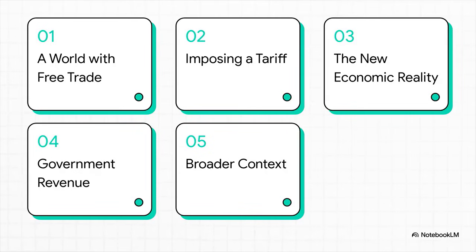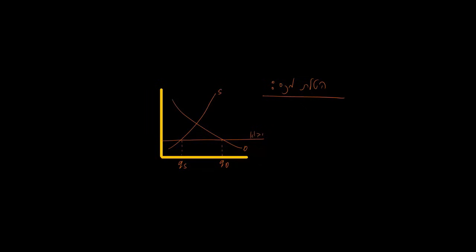We'll see how one little tax can change the whole game for local businesses and for your wallet. So here's the plan. First up, we're going to set the stage with a world of free and open trade. That's our before picture. Then we'll throw a tariff into the mix and watch how that changes everything for producers and consumers. We'll even do the math on how much money the government makes from this. And finally, we'll zoom out and see how tariffs fit into the much bigger economic puzzle.